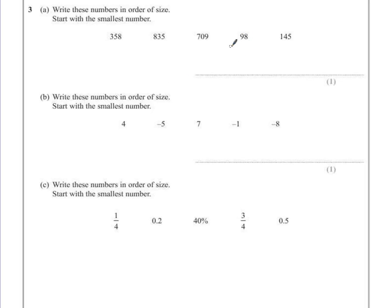The smallest number is going to be 98, it's the only one that's under 100. So if we write that one down, cross it off.